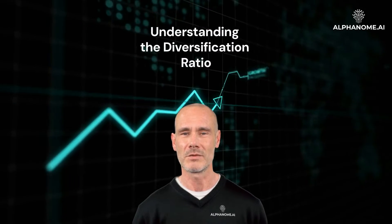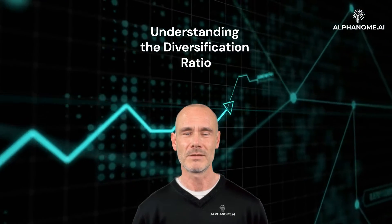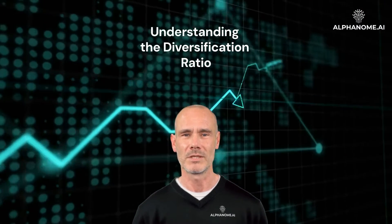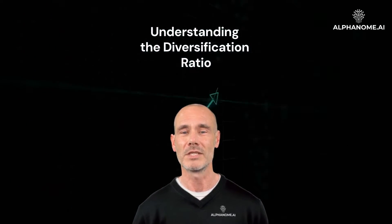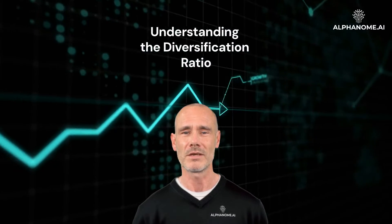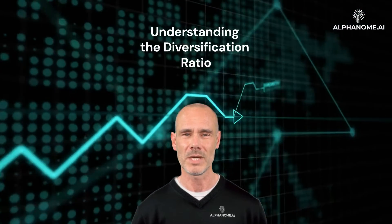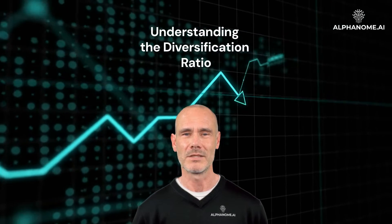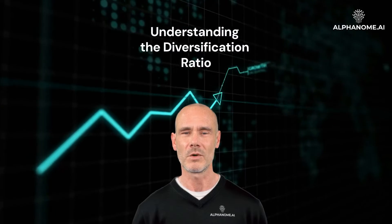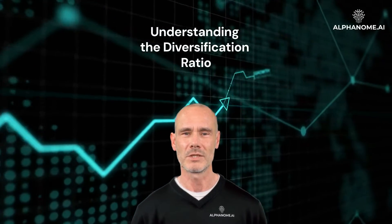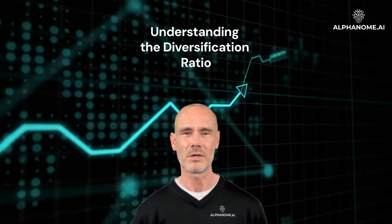Understanding the Diversification Ratio: A Crucial Metric for Portfolio Risk Management. The diversification ratio is an important metric used by investors and portfolio managers to measure the risk reduction benefits achieved through diversification within a portfolio. Diversification aims to reduce overall portfolio risk by spreading investments across different asset classes, sectors, and securities that are not perfectly correlated. The diversification ratio quantifies the degree to which diversification has reduced the overall risk of a portfolio compared to a theoretical portfolio where all assets are perfectly correlated.